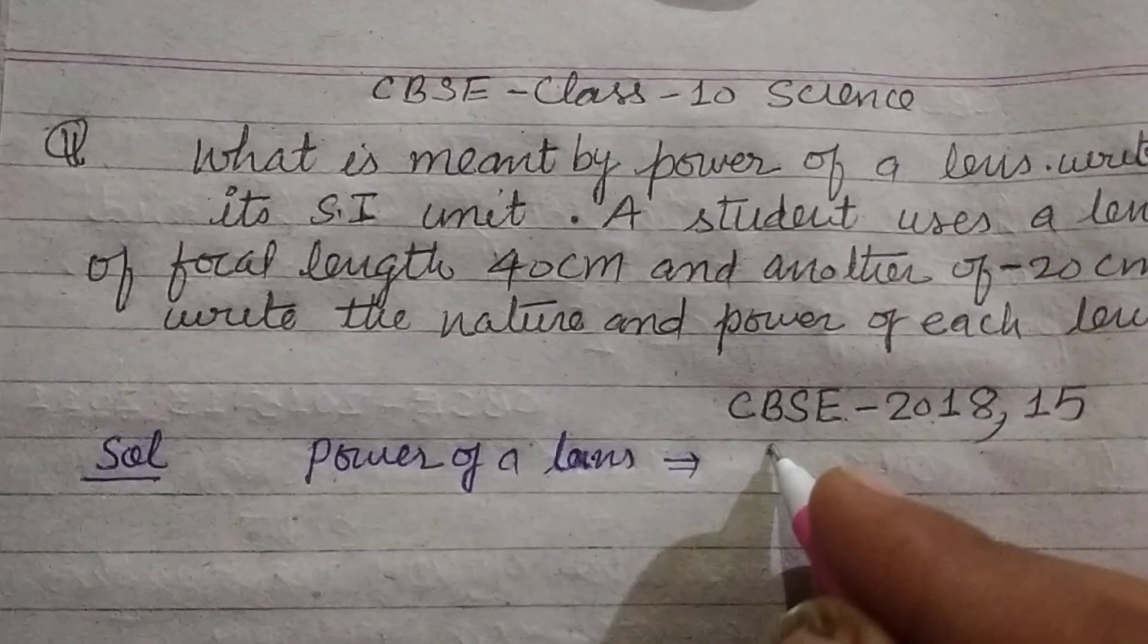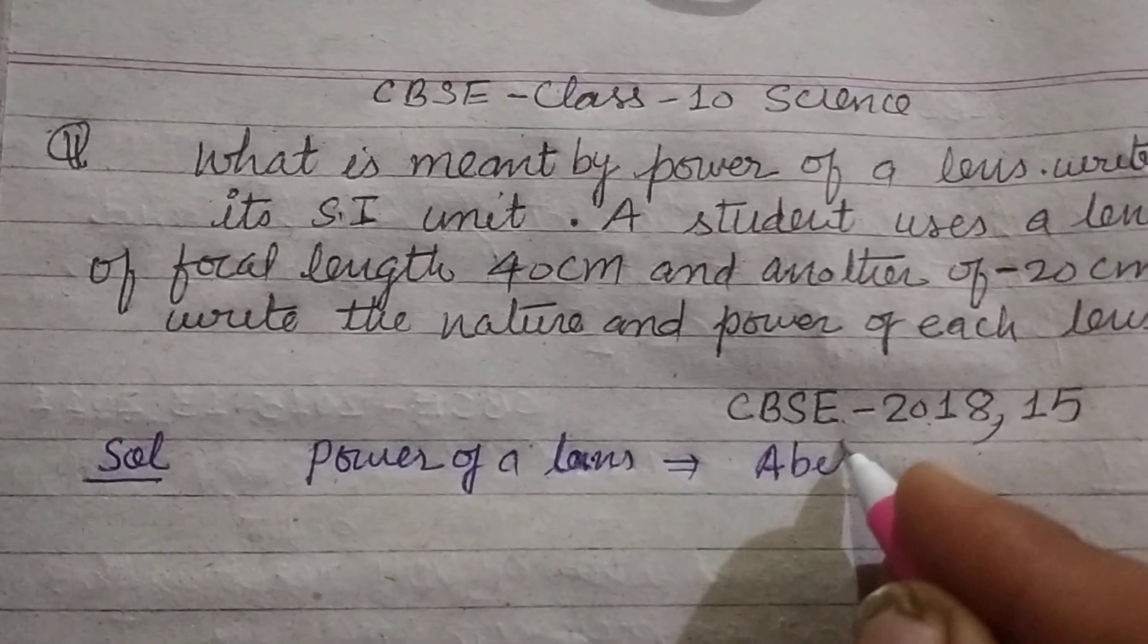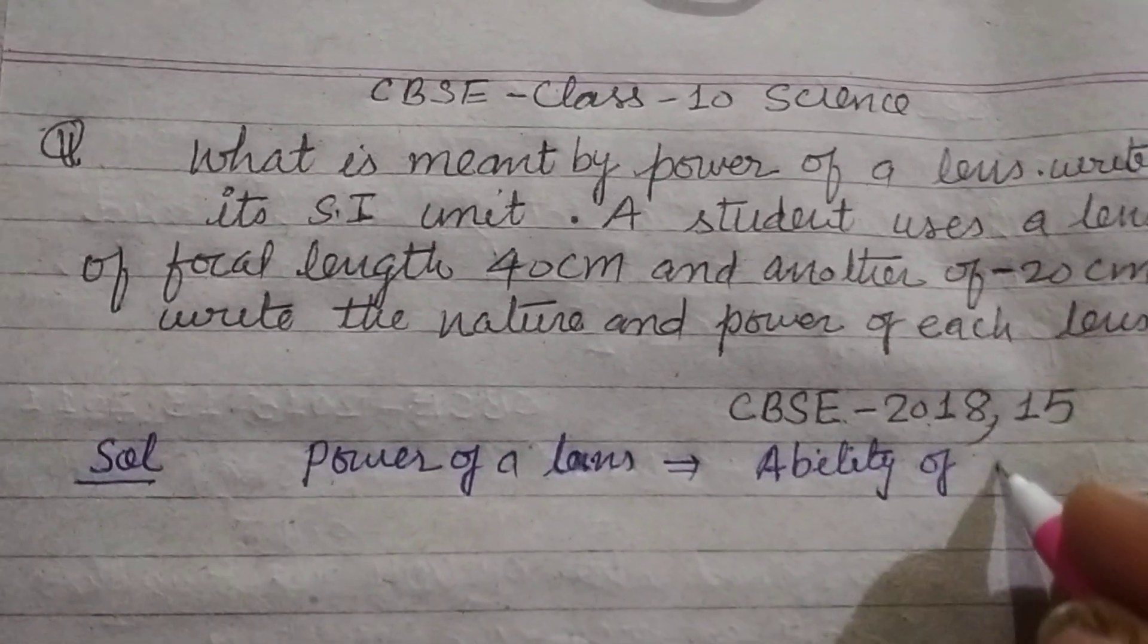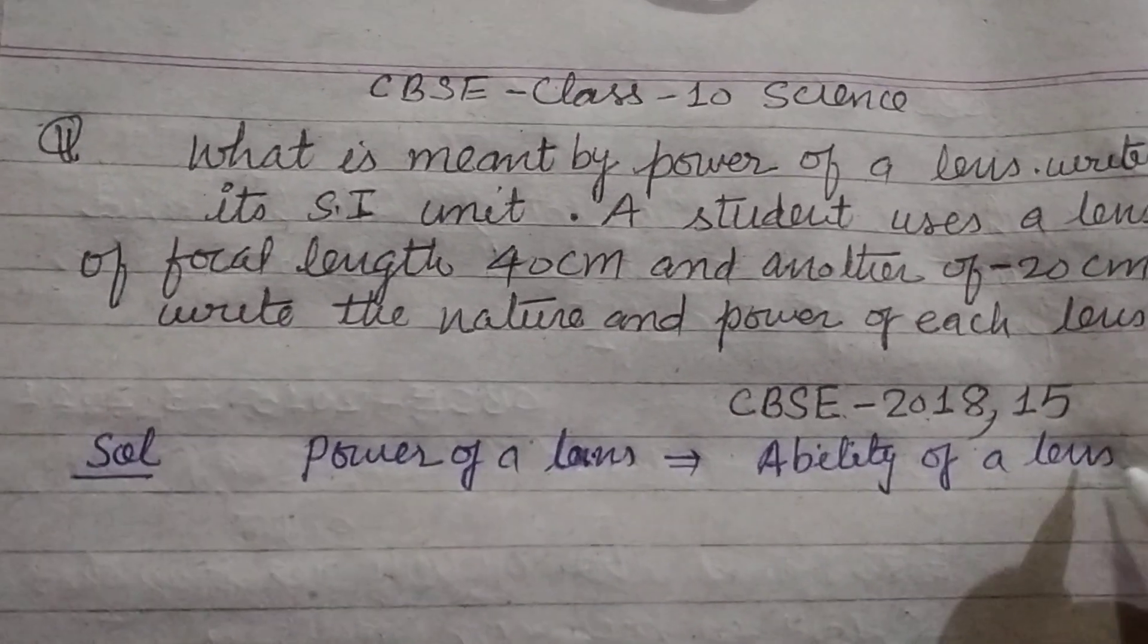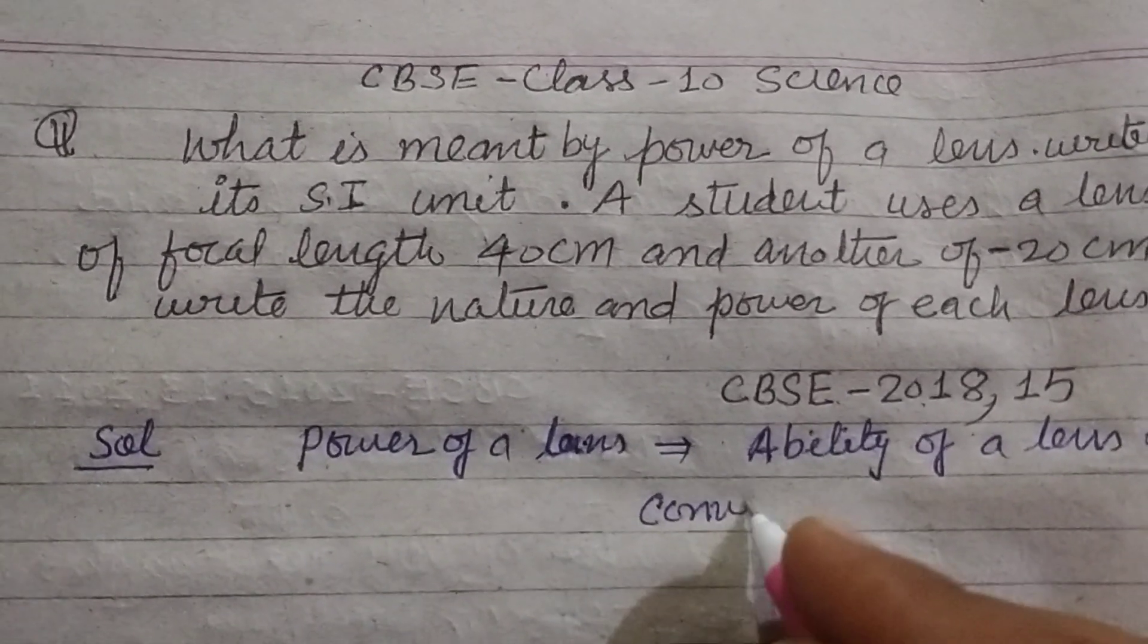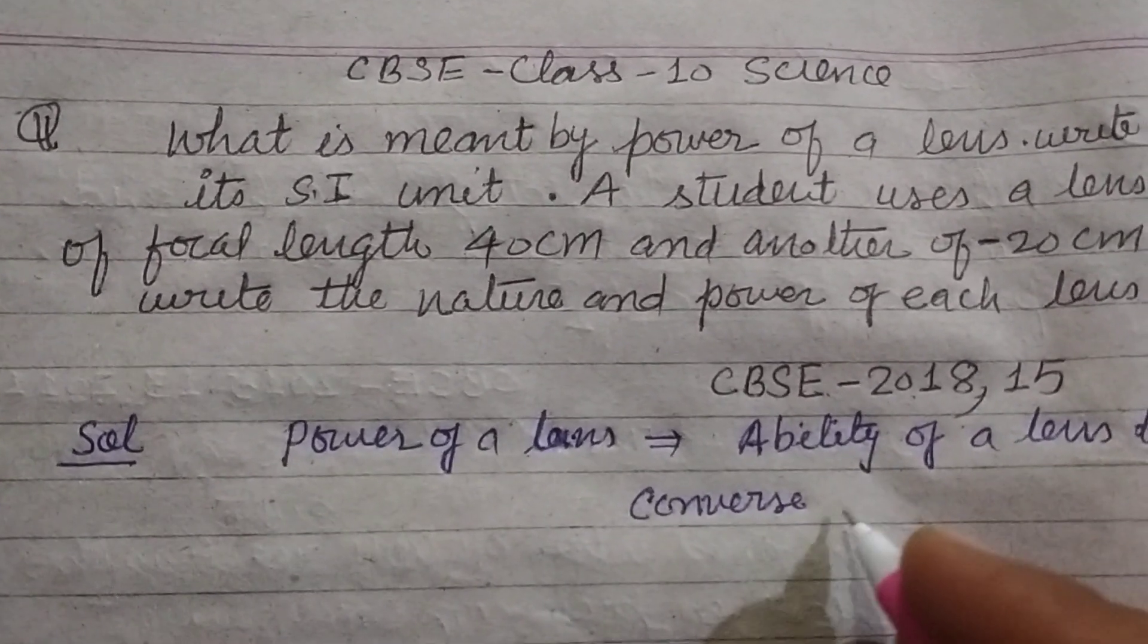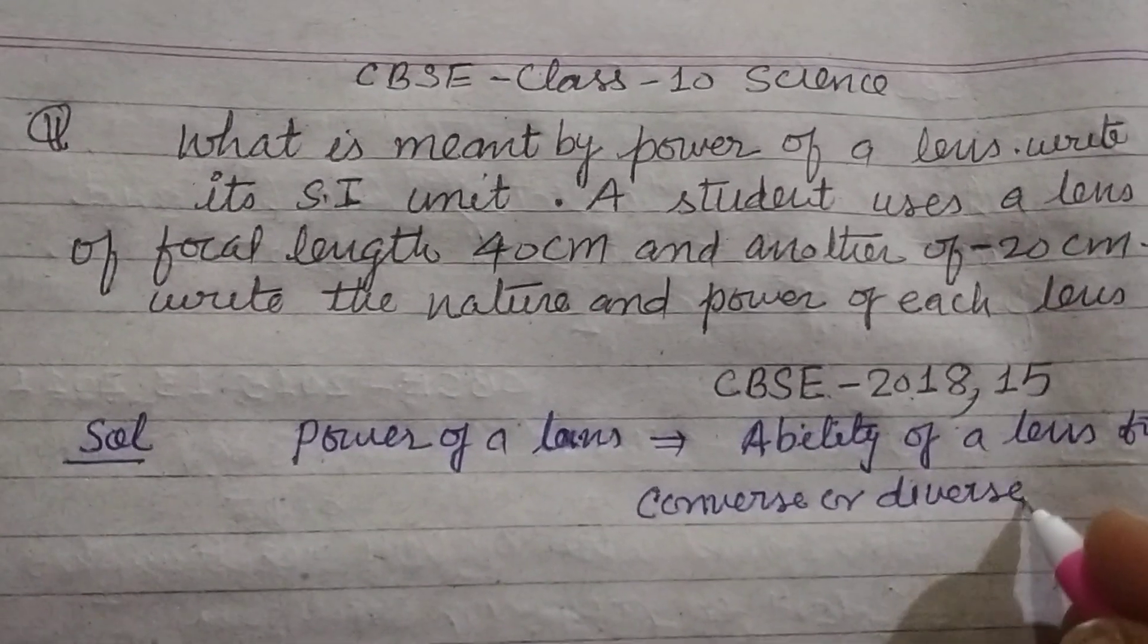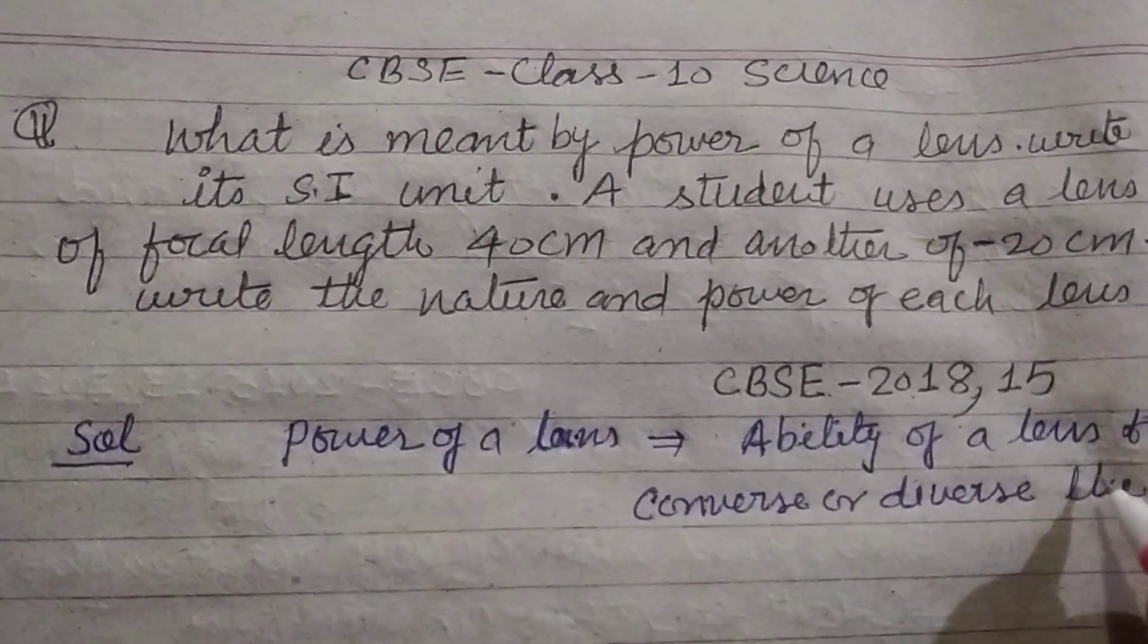So, ability - this is the ability of a lens to converge or diverge the light rays.